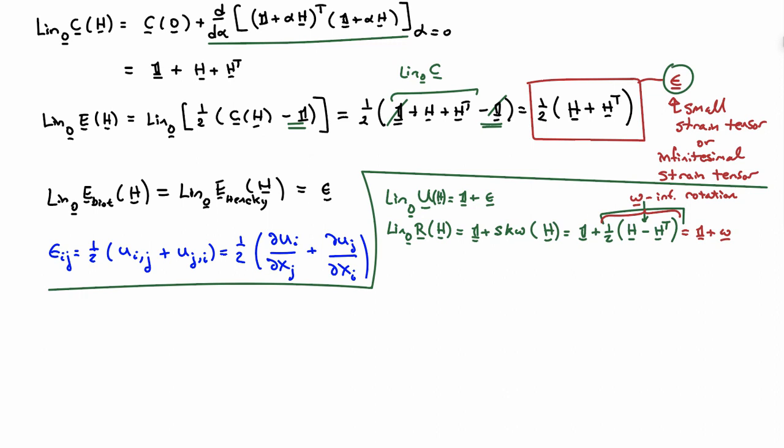The quantity one-half (H minus H-transpose) is usually denoted with the symbol omega and is known as the infinitesimal rotation tensor. So the linearized rotation is identity plus omega. Another interesting quantity to linearize is the Jacobian—the determinant of F. If we linearize that with respect to H, we get one plus the trace of epsilon. So the trace of epsilon represents the volumetric strain, since J minus one is the volumetric strain, with J being the volumetric stretch.